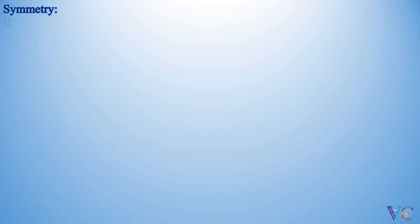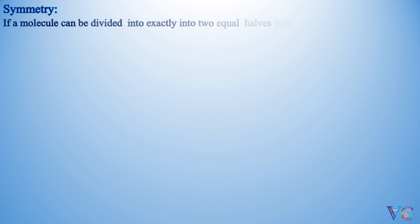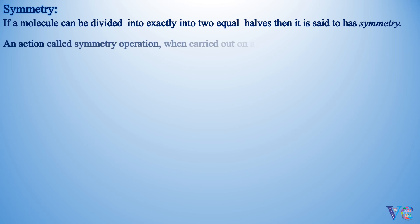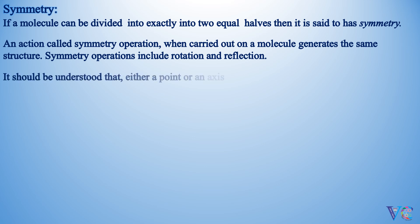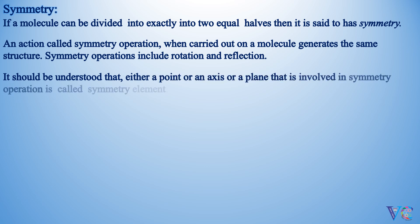Symmetry — if a molecule can be divided into exactly two equal halves, then it is said to have symmetry. An action called a symmetry operation, when carried out on a molecule, generates the same structure. Symmetry operations include rotation and reflection. Either a point, an axis, or a plane that is involved in the symmetry operation is called a symmetry element.